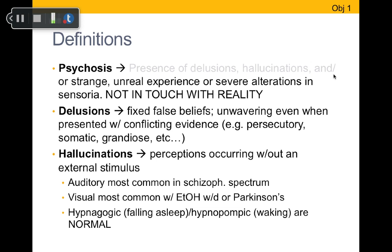Visual hallucinations tend to be less common in schizophrenia spectrum disorders, but more common in people undergoing alcohol withdrawal, which we'll cover in the substance use disorders lecture. They're also fairly common in people with Parkinson's or Parkinson's dementia when they start to develop certain psychotic symptoms.